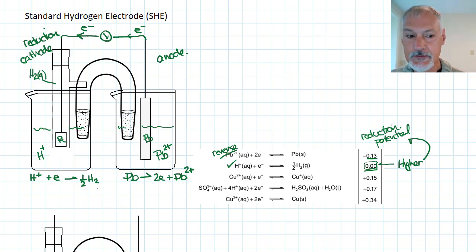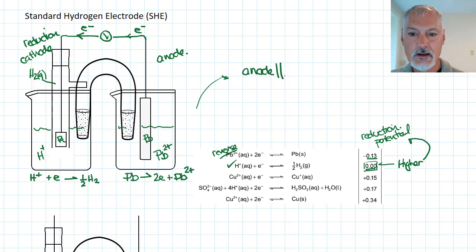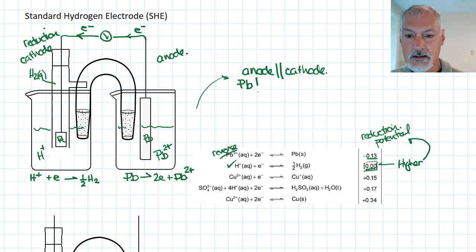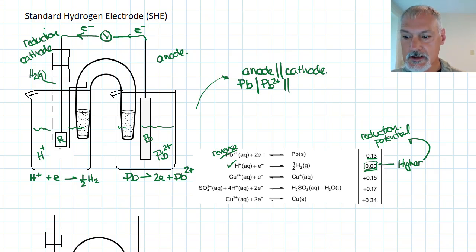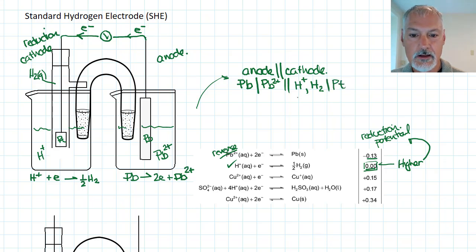Now we can express this in an overall reaction. When we write a cell diagram we tend to put the anode first, then our salt bridge, then what's happening at the cathode. So in this case the anode would be the metal lead, then my phase boundary with the lead ions, then my salt bridge. To describe what's happening at the cathode, I'll list the ions present — a gas is present — then my phase boundary and electrode. This is typically how we define an electrode when we have gases present.